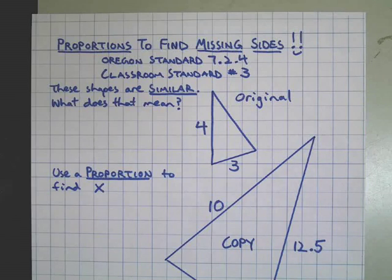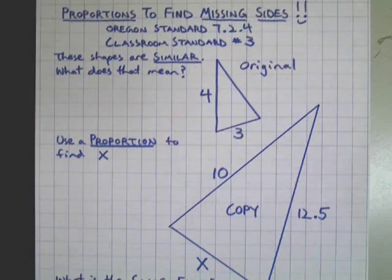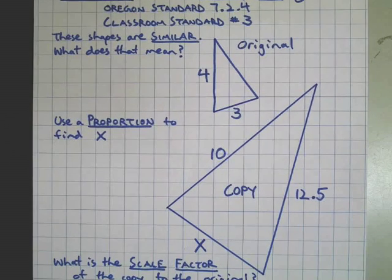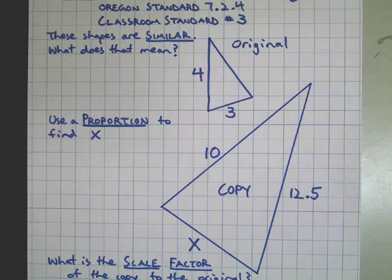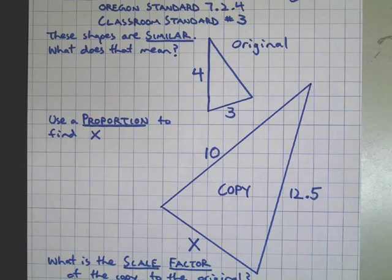Here we go. As you know, this is classroom standard number 3, Oregon State Standard 7.2.4, talking about solving problems using proportional relationships including similarity and congruence. Alright, just like on the test we've taken, got a couple of shapes here. These are triangles and the problem tells you they are similar.